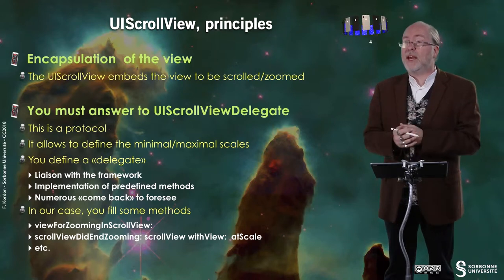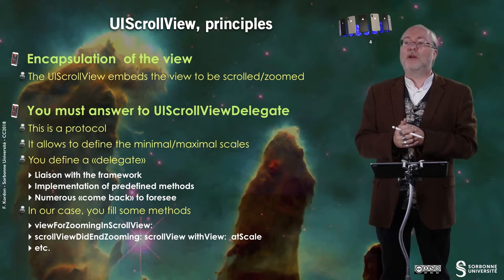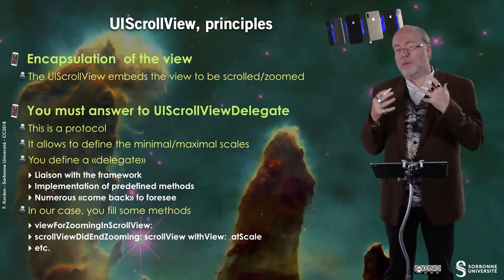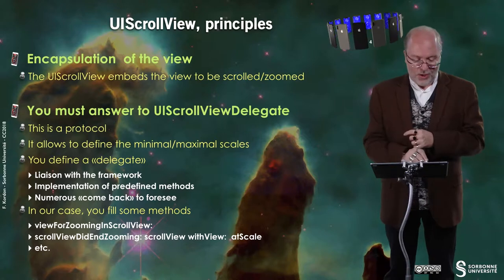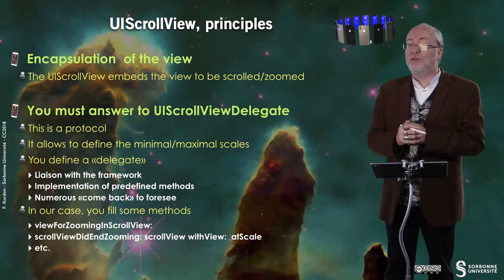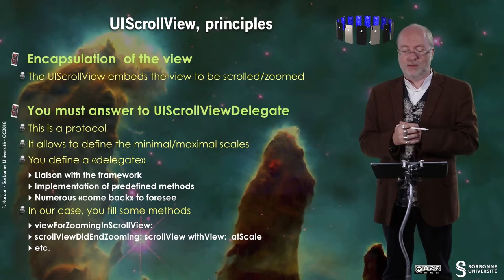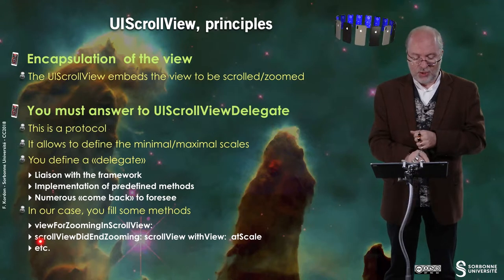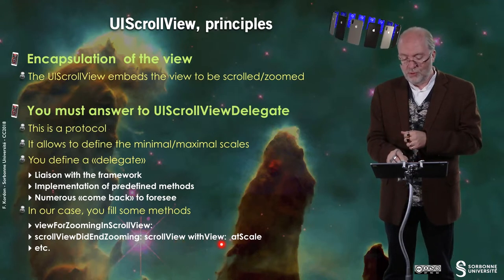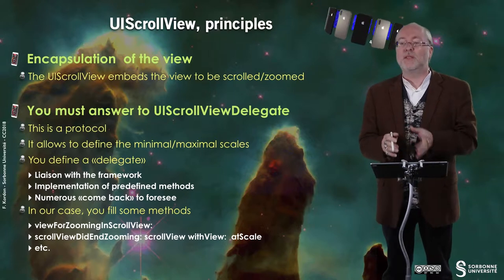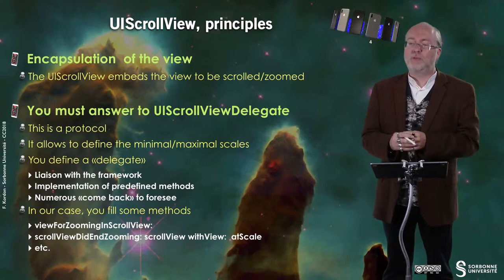In the case of the UIScrollViewDelegate, we are especially interested in two methods. The first is viewForZooming(in scrollView) — that's the Swift name. The second is scrollViewDidEndZooming(_:with:atScale:). You will also see it in Objective-C, but we'll focus mainly on Swift.